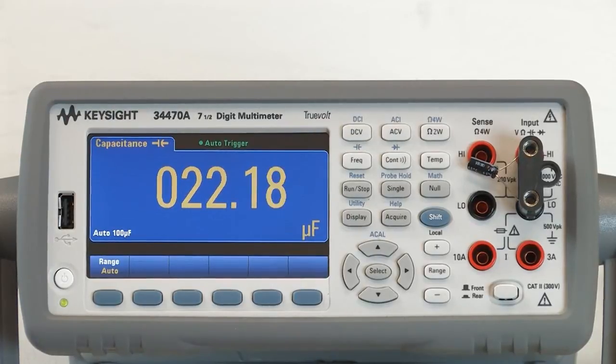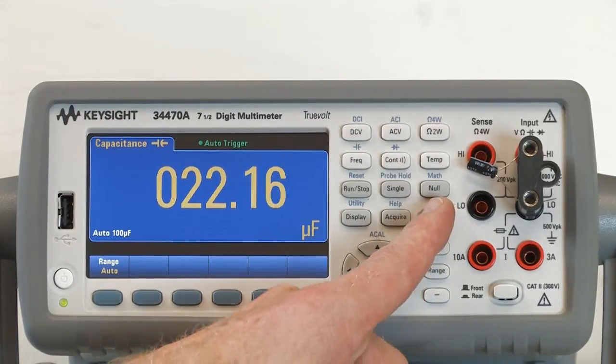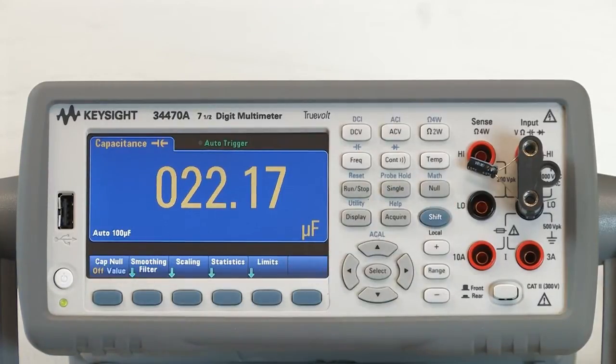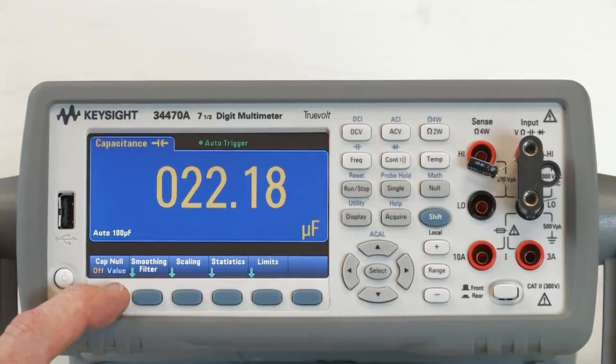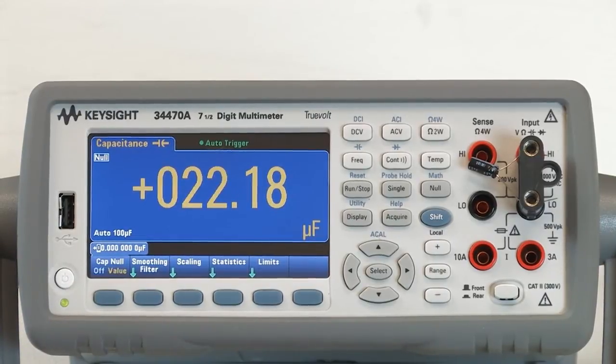First, to set up the math null, I'll simply select Shift Math, select Capacitor Null Value, and as you can see, we have an offset.